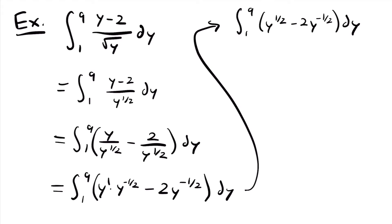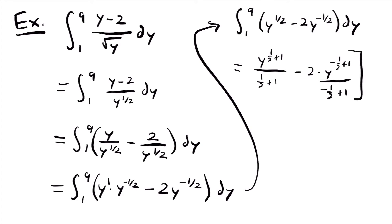Now we have the function in a state we know how to integrate. Using the power rule for each term, this will be equal to y to the power of one half plus 1 divided by one half plus 1, minus 2 times y to the power of negative one half plus 1 divided by negative one half plus 1, evaluated from 1 to 9. Simplifying: one half plus 1 is three halves, so we get y to the three halves power divided by three halves, minus 2 times y to the one half power divided by one half — because negative one half plus 1 is one half.